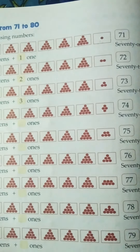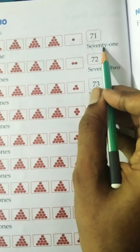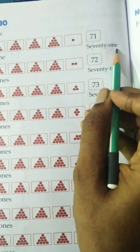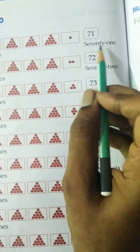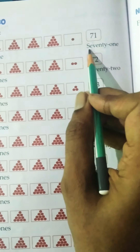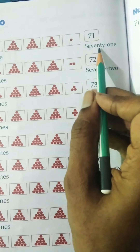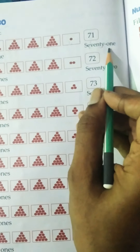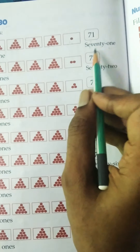Spelling is S-E-V-E-N-T-Y, 70, O-N-E, 1, 71. I repeat again: S-E-V-E-N-T-Y, 70, O-N-E, 1, 71.